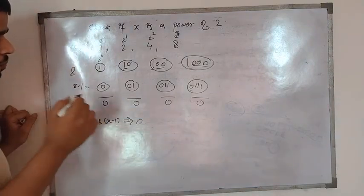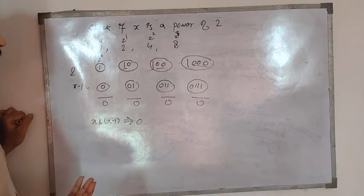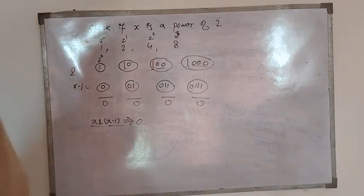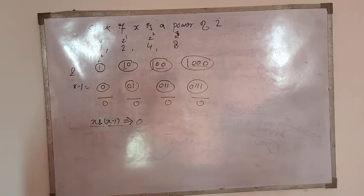So if a number is a power of 2, then X AND X minus 1 will always be 0. Thanks for watching, please subscribe to my channel.